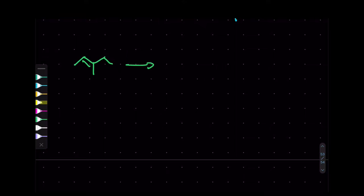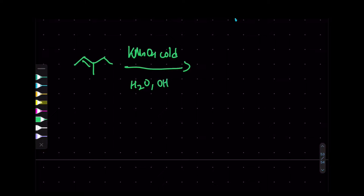A similar reaction uses KMnO4 cold — potassium permanganate at cold temperature — with H2O and OH⁻. This reaction is very similar, producing OH and OH on the same side, so it also creates a syn diol.